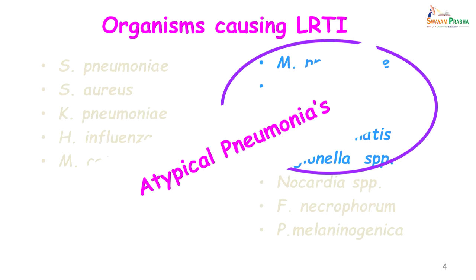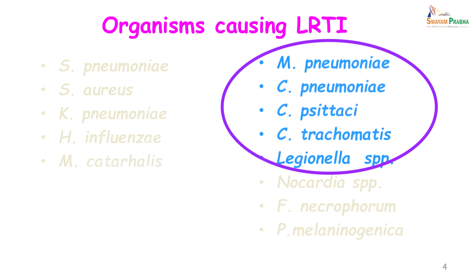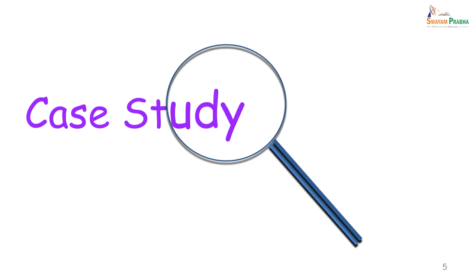These organisms are known to cause atypical pneumonias and they are called so because they do not respond to the beta-lactam antibiotics. Of this group we will be restricting ourselves to the first four; I would not be talking about Legionella in this lecture. Let us look at a case study.